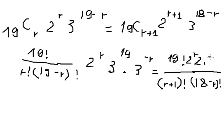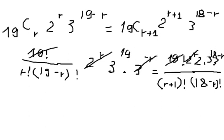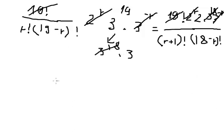We also have 3 to the power of negative r on the right side. Now we simplify: 3 to the power of 19 can be written as 3 to the power of 18 times 3, so we can cancel 3 to the power of 18 from both sides.